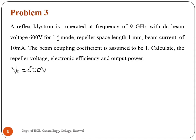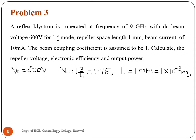Given parameters: beam voltage V0 is 600 volts, mode is 1 and 3/4 which equals N = 1.75, frequency is 9 gigahertz, repeller space is 1 millimeter equals 1 × 10⁻³ meters, beam current I0 is 10 milliamperes, and beam coupling coefficient beta is equal to 1.